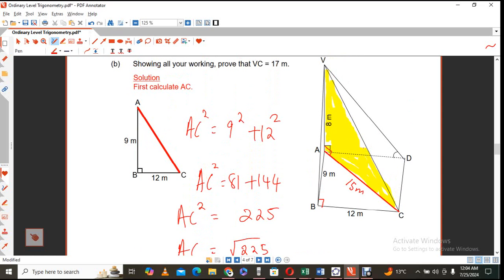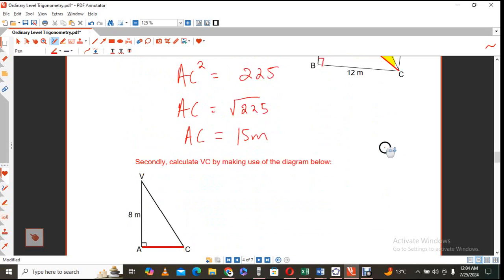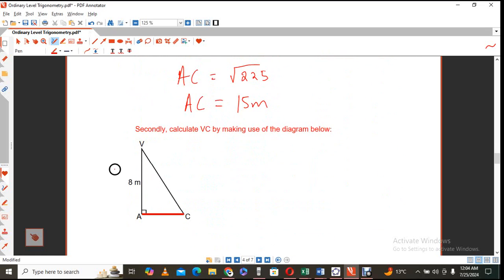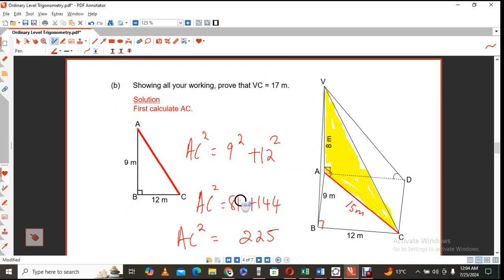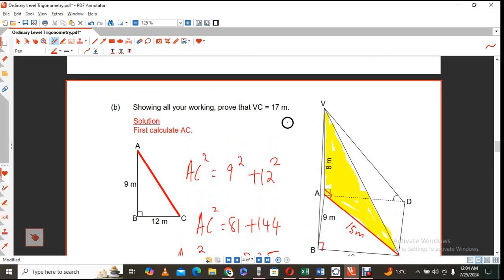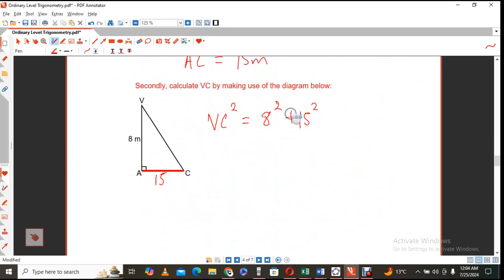So I'm going to take that triangle again. So again, we said this is 15. So now we can count or calculate VC by using Pythagoras's theorem again, because Pythagoras's theorem is what we would use in order to show that this is 17 meters as the information that was given, so we'll find VC there.